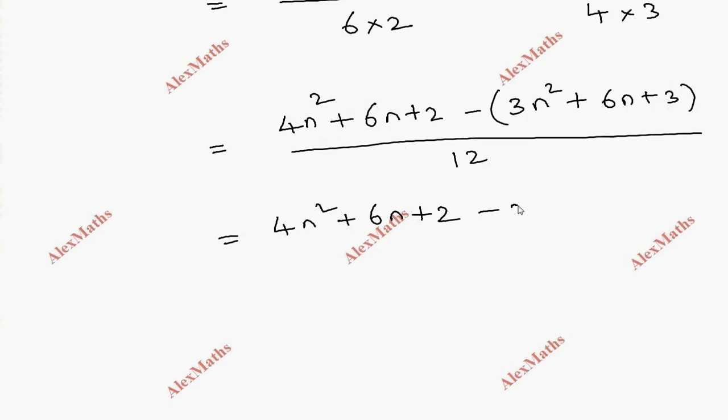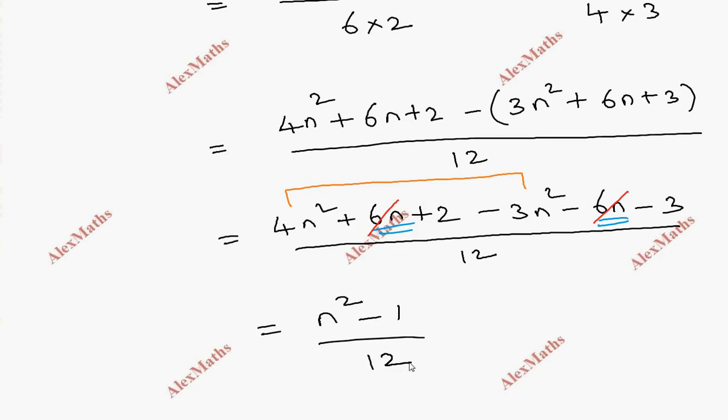Now this simplification: n square, 6n minus 6n cancel, positive 2 minus 3 is minus 1, divided by 12. So this is the variance n square minus 1 by 12.